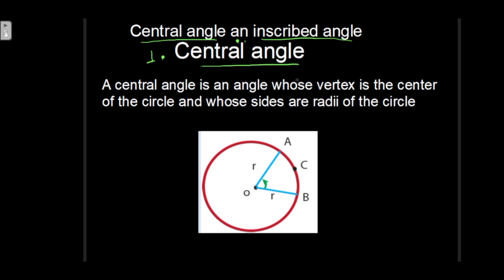You can tell this: it's an angle whose vertex is the center of the circle, which takes place at the center of the circle and whose sides are the radius of the circle.